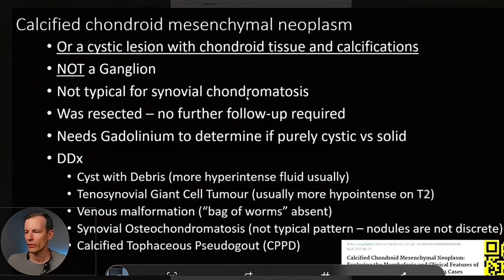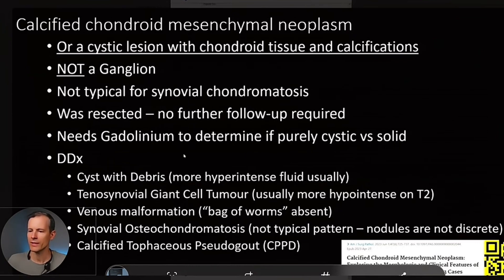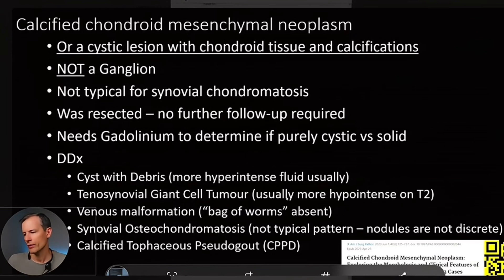I know it's not typical for synovial osteochondromatosis, but if you have to give a guess, that's the best I came up with. It was resected and no further follow-up was required. Gadolinium is needed to determine if it's purely cystic or solid — we didn't see the gadolinium images. The differentials really include cyst with debris, or potentially an atypical ganglion cyst, though it didn't have a very cystic appearance. Tenosynovial giant cell tumor normally shows lower signal on T2.